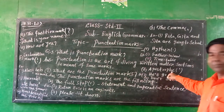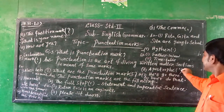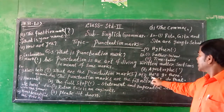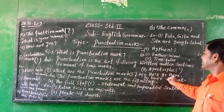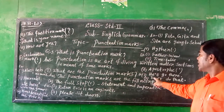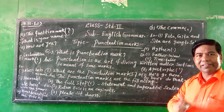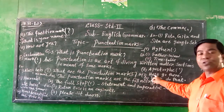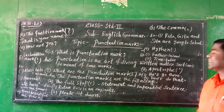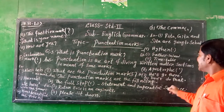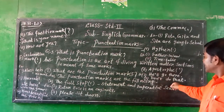Number four: apostrophe. Do you know apostrophe? This is apostrophe. For example, he'll go there — that means 'he will go there.' Don't do that — that means 'do not do that.' Understand?